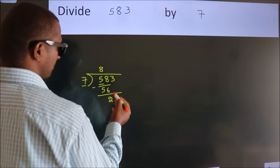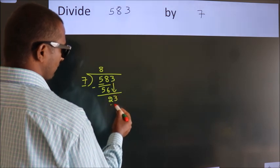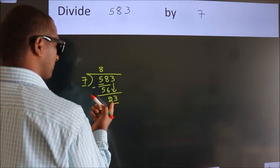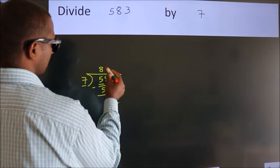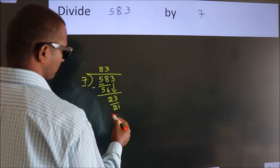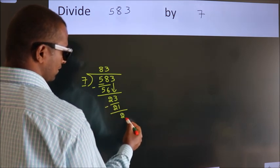After this, bring down the beside number. So 3 down, giving us 23. A number close to 23 in the 7 table is 7 times 3, 21. Now we subtract. We get 2.